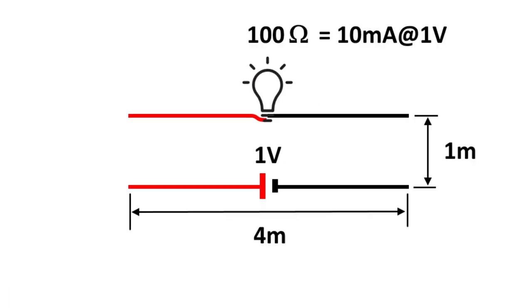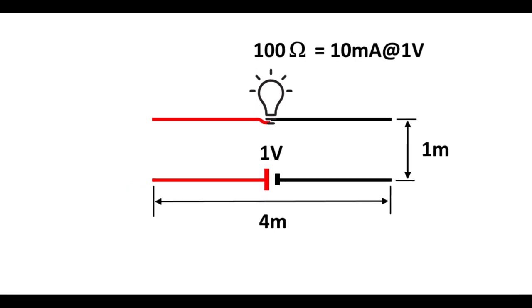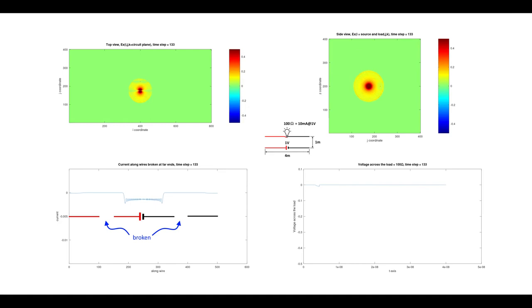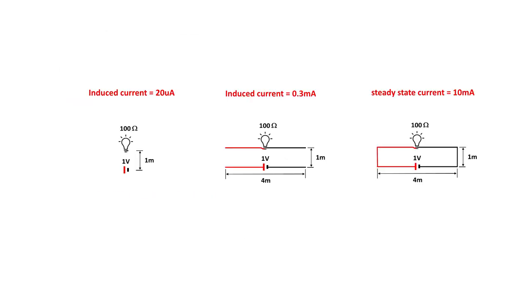What if the light bulb and the source are connected with wires in parallel, but broken at the too far ends? The simulation shows that the long wire helps to induce more current in the load up to about 0.3mA. The induced currents travel along the wires until they hit the open ends and bounce back. The source currents also bounce back at the open ends and are not able to travel to the load. The induced current is higher than the floating light bulb without wires, but much less than the case where the wires were there to complete the circuit and to deliver the current.